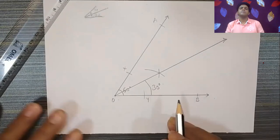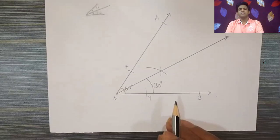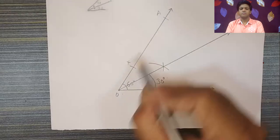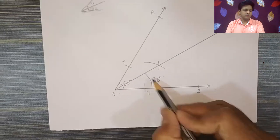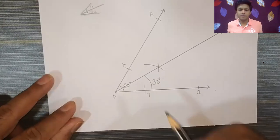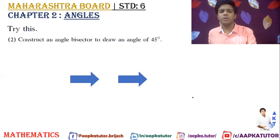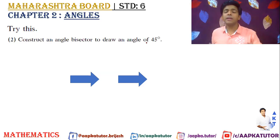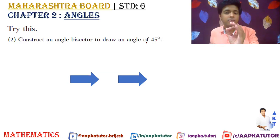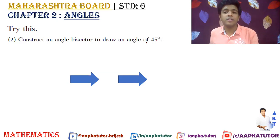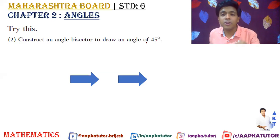So the answer to the question — construct an angle bisector to obtain 30 degrees — is: first make 60 degrees, then apply the angle bisector to get 30 degrees. Next question: construct an angle bisector to draw an angle of 45 degrees. For 45 degrees, we obviously use the angle bisector of 90 degrees. When you bisect 90 degrees, you get 45 degrees.